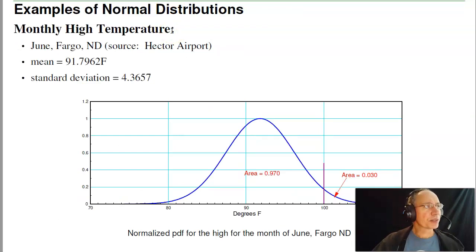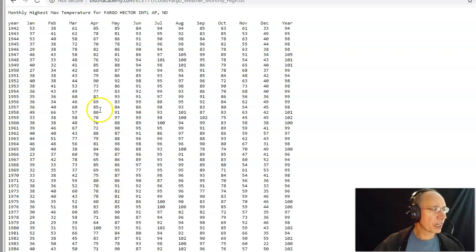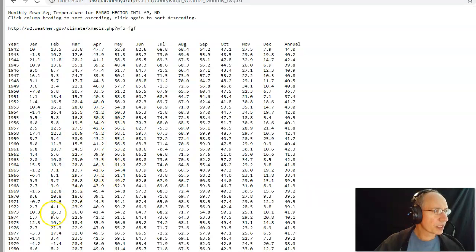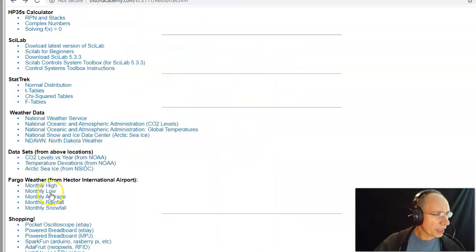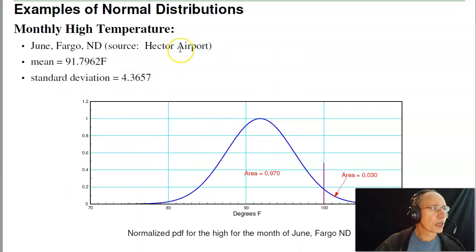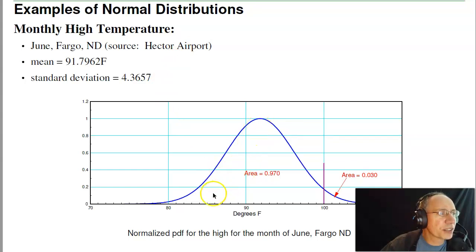A couple of examples of normal distributions. From Hector Airport you can get all sorts of data — this is the high for the month since 1942 in Fargo. I can also give you the monthly average temperature and the rainfall month by month since 1942. Any of those will have a roughly normal distribution. For example, the temperature has a mean and a standard deviation. If I plug that into a normal distribution curve, this is what the PDF looks like for the high temperature for the month of June in Fargo, North Dakota — the mean is 91.79 and the standard deviation is 4.36.